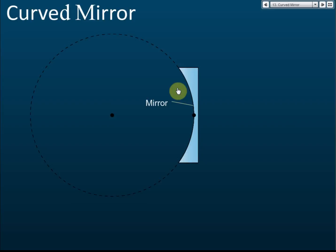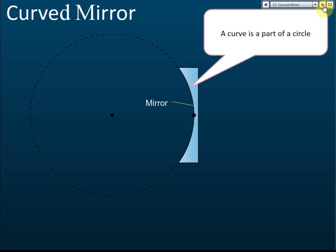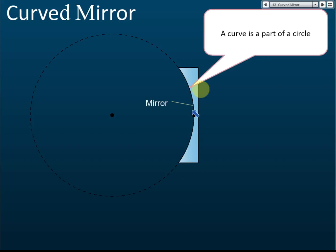A curved mirror — first of all, you need to know that a curve is part of a circle. If you cut this circle and take out part of it, that part is called a curve.